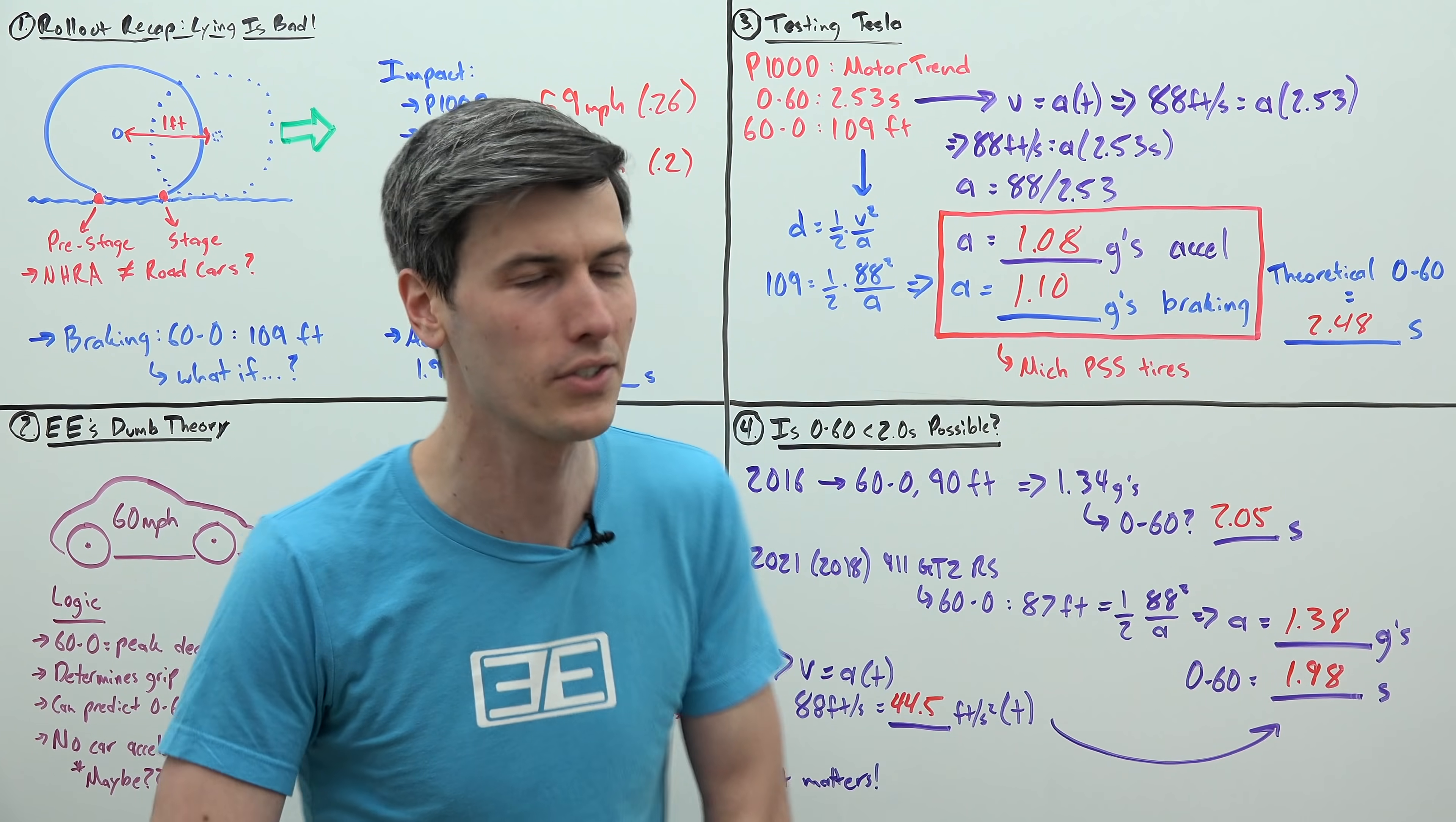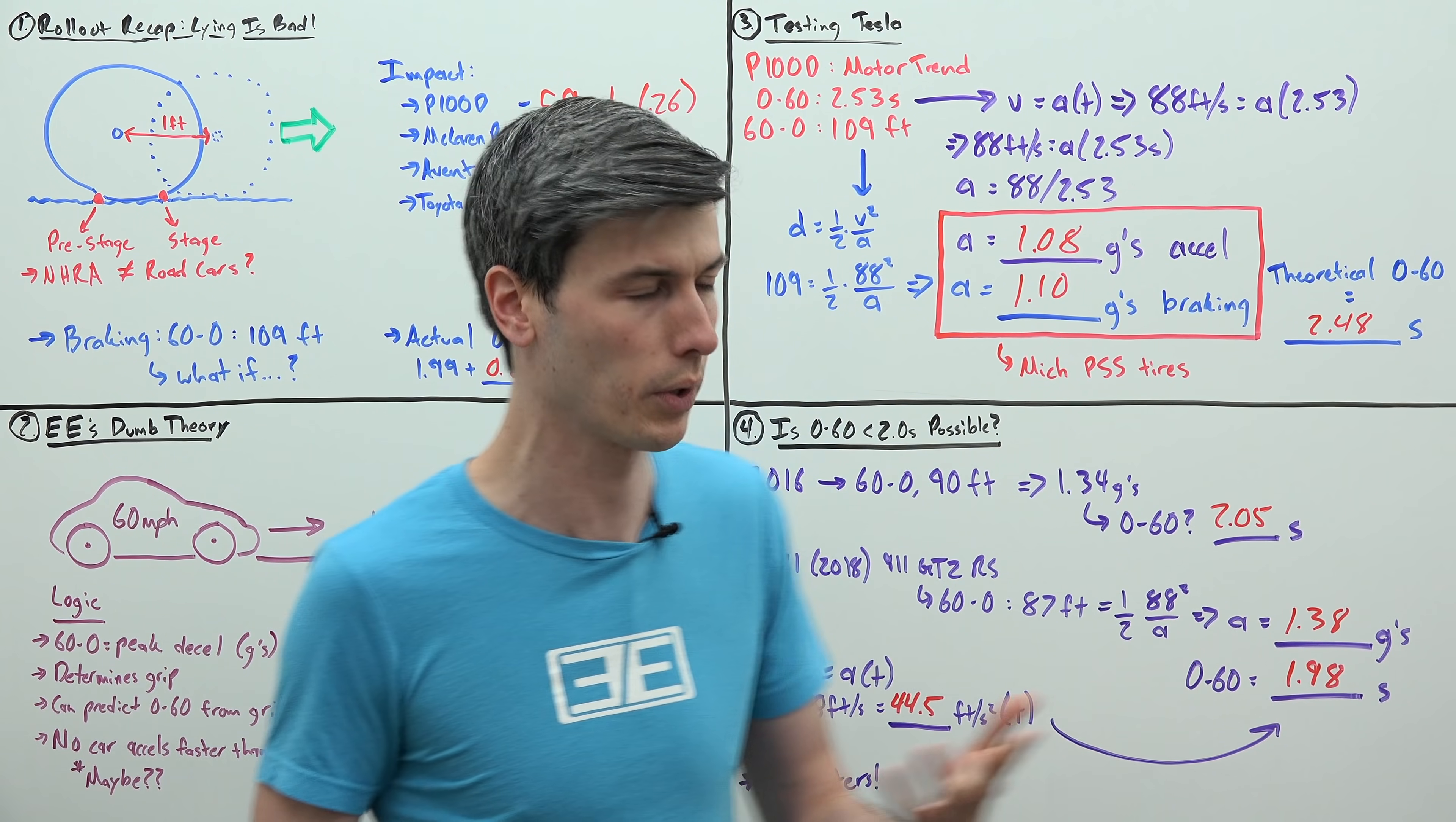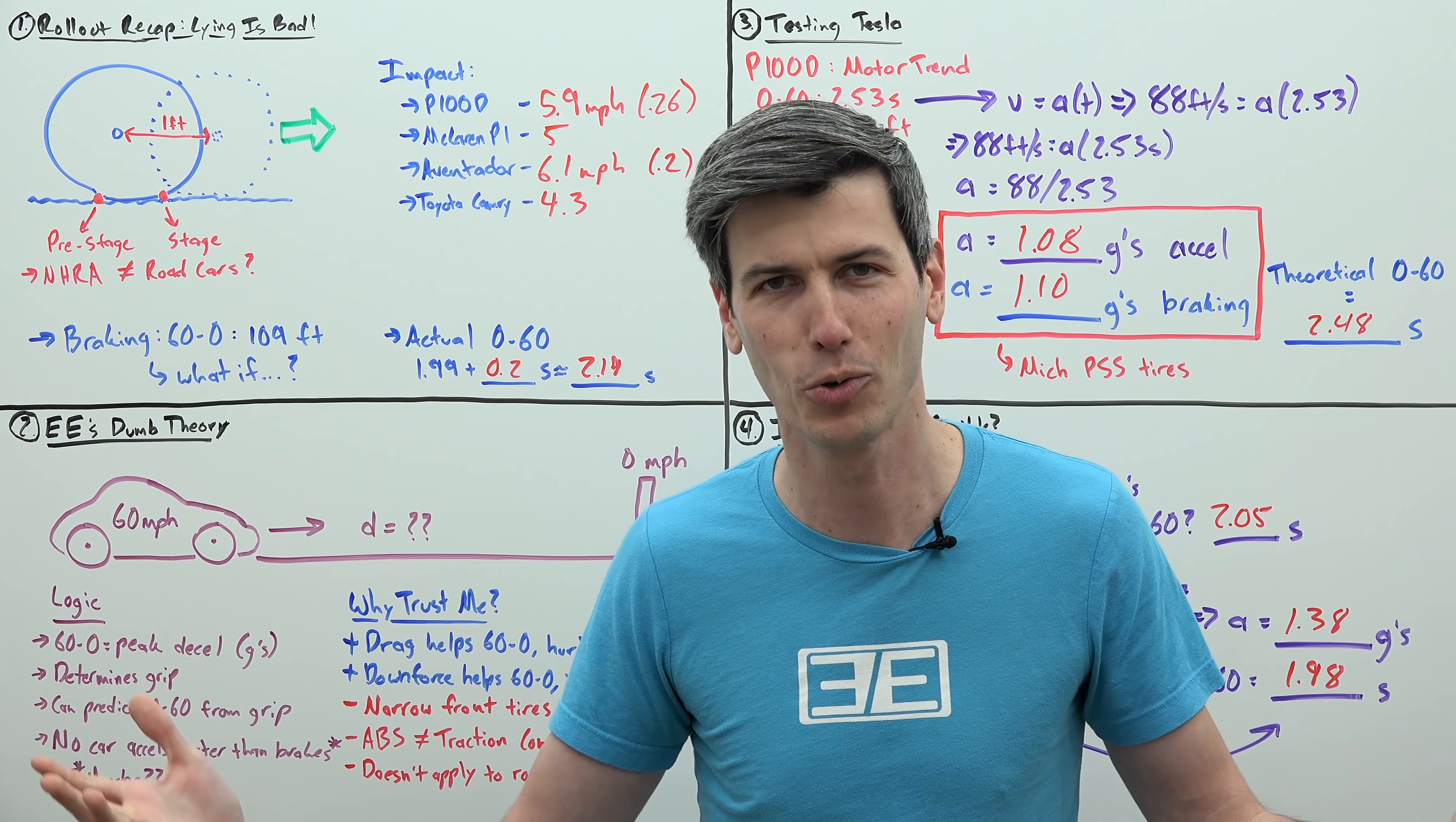So to Tesla, I would say, at the very least, put a little asterisk on the main page that says 1.99, like you do in the fine print, or better yet, put the actual 0 to 60 speed on it, like you do for the base model, or better yet, actually get a 0 to 60 under two seconds, and then we can all celebrate. It can be legitimate from zero miles per hour to 60 miles per hour. How cool would that be?